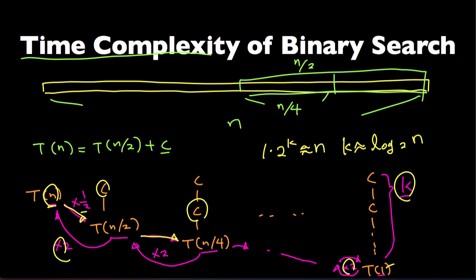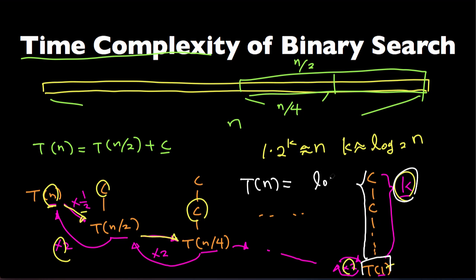So the total runtime for this function is going to be K times c plus a constant, but the constant we can ignore, so the total runtime is K which is log of n times c, but c is a constant, so we can write it as O(log n).